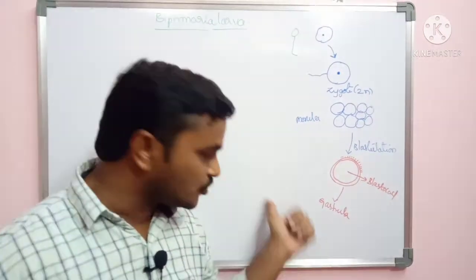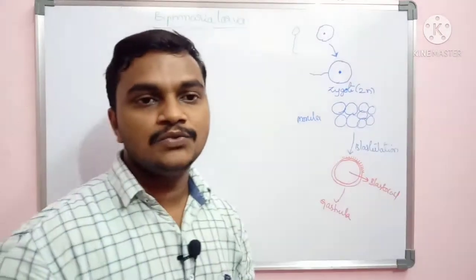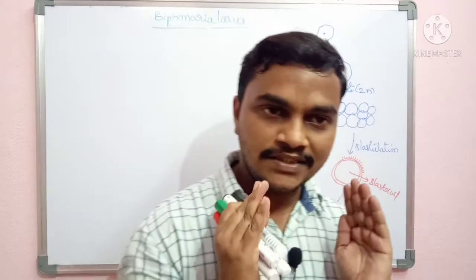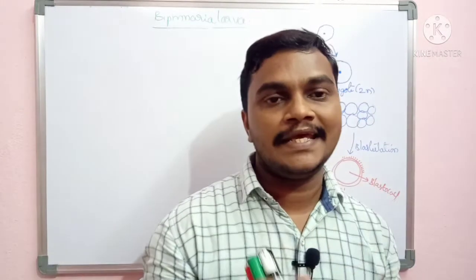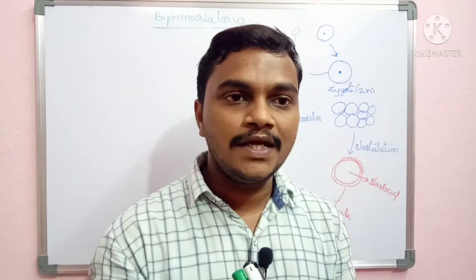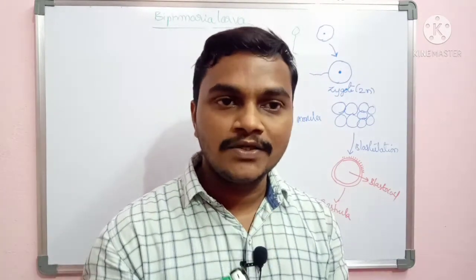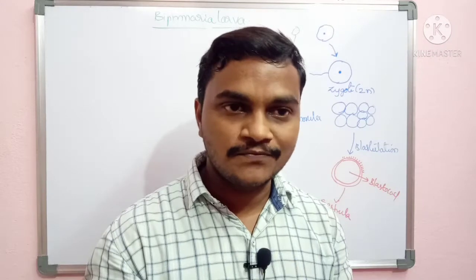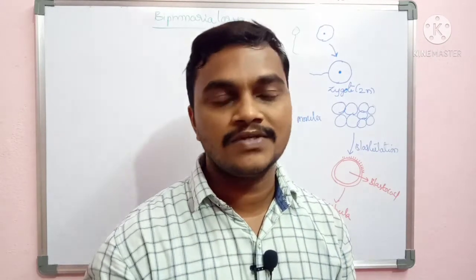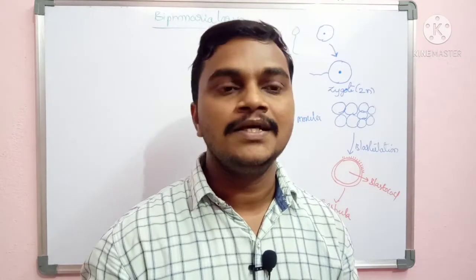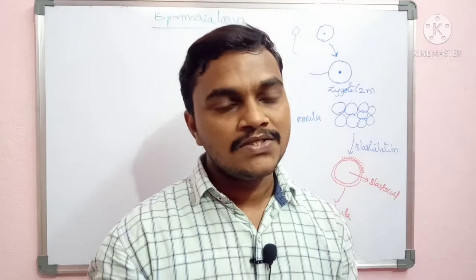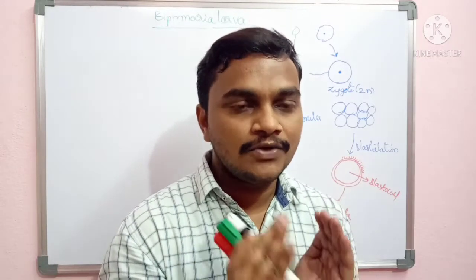In echinoderm development we will see one larval stage — that is the Bipinnaria larva. Then the Bipinnaria larva will undergo metamorphosis, and automatically it will produce the next larval stage, that is the Brachiolaria larva.